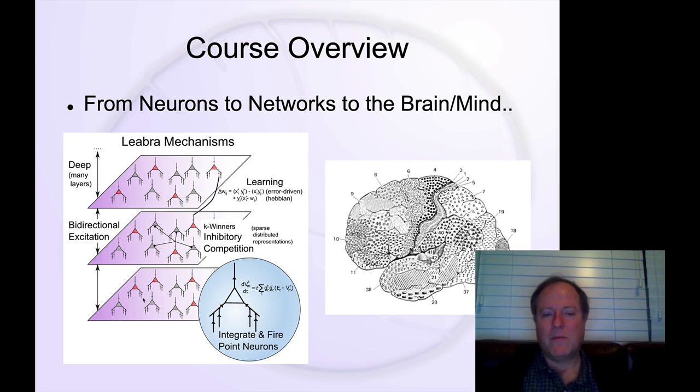This set of core mechanisms helps us give us a foundation for understanding that. We know that individual neurons in these different brain areas compete with each other. That's a critical principle. They inhibit. They interact through local inhibitory interneurons that produce this inhibitory dynamic.